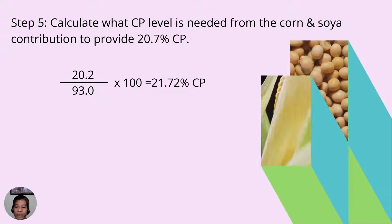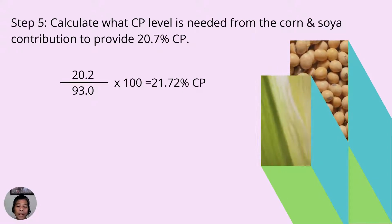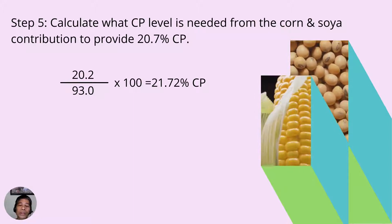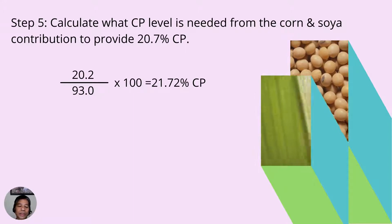we need to divide 20.2 by 93 and multiply it with 100 to get 21.75%.